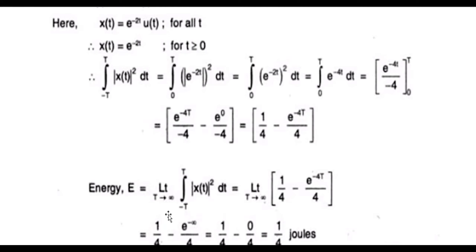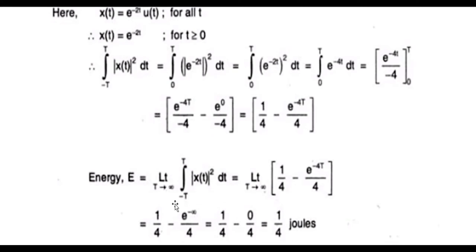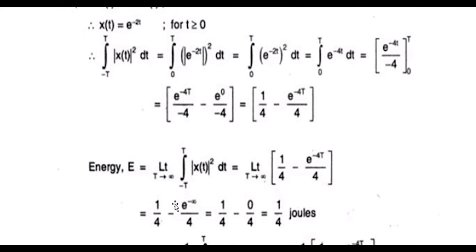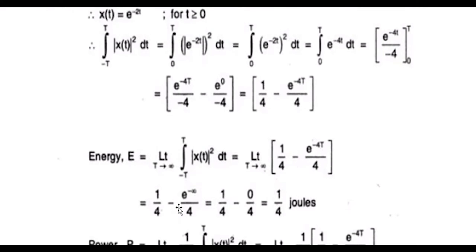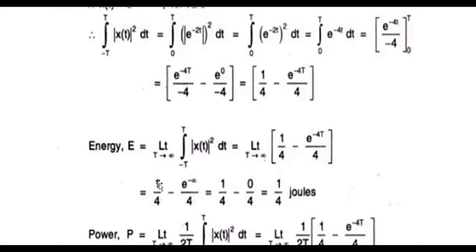Now if we want to calculate the energy of the signal, this is the formula: the limit as p tends to infinity of the integral from minus T to T of |x(t)|^2 dt. Since we have already evaluated |x(t)|^2, I will substitute here — saying that as p tends to infinity, it becomes 1/4 minus e to the power of minus infinity divided by 4.